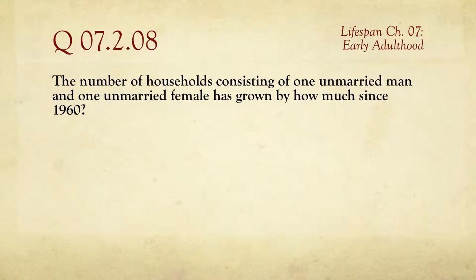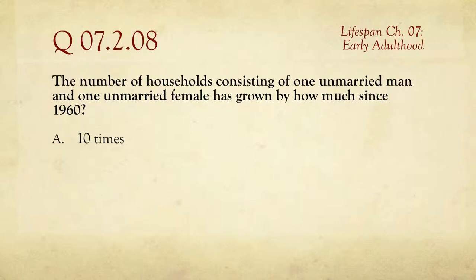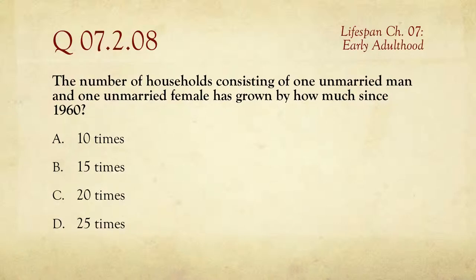Question number eight: the number of households consisting of one unmarried man and one unmarried female — couples who are cohabiting — has grown by how much since 1960? Is it 10 times higher, 15, 20, or 25 times? Despite what people might think, it is 10 times higher — so it is a lot. On the other hand, it's the number of households as opposed to rates, so keep in mind there are also just more people.